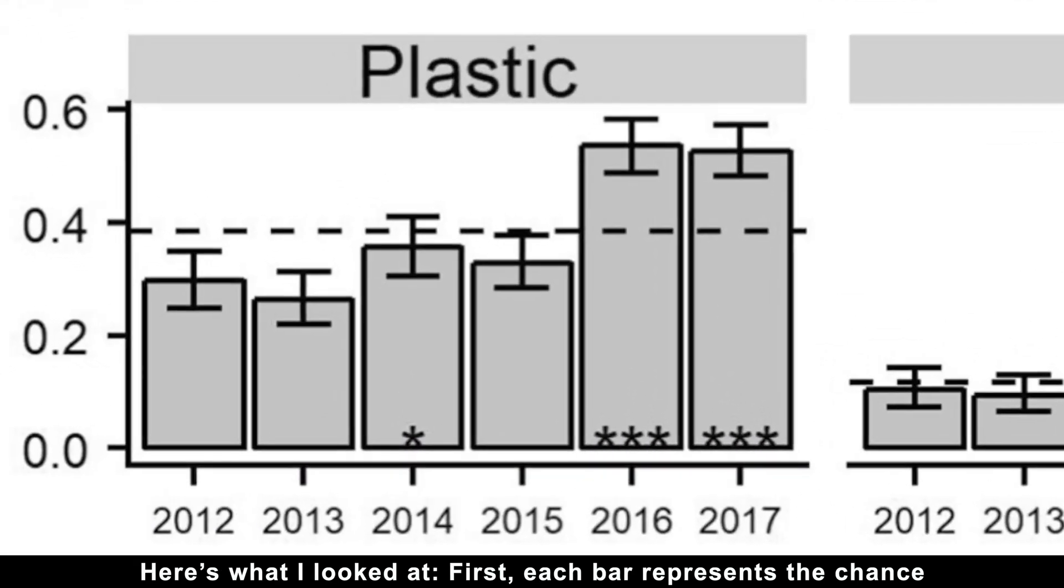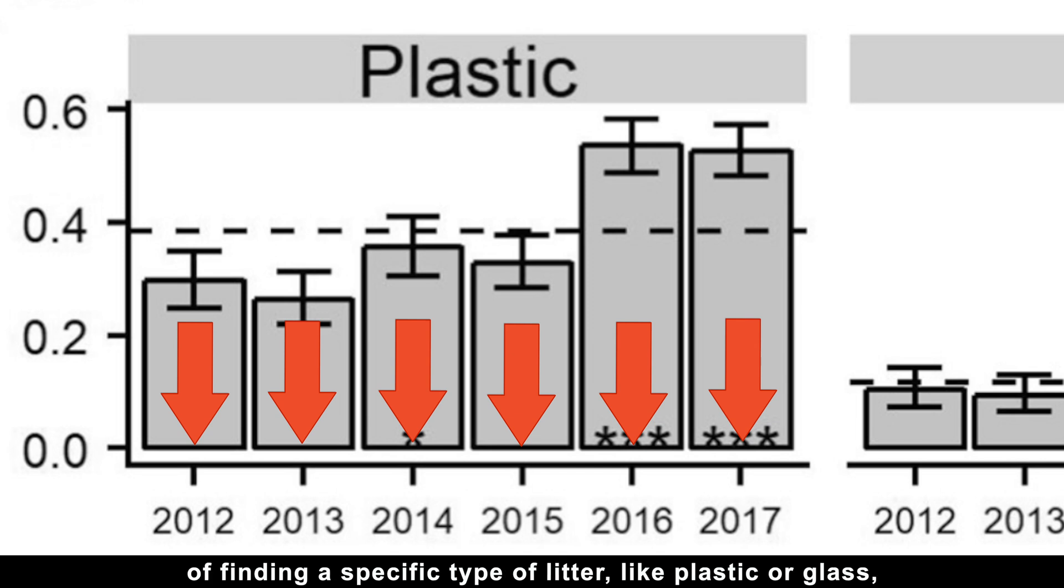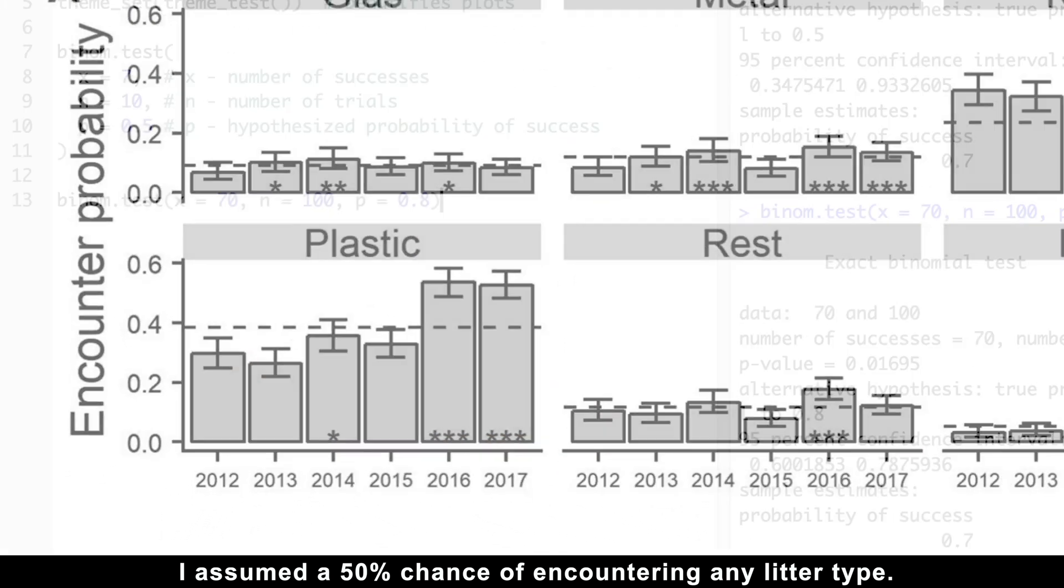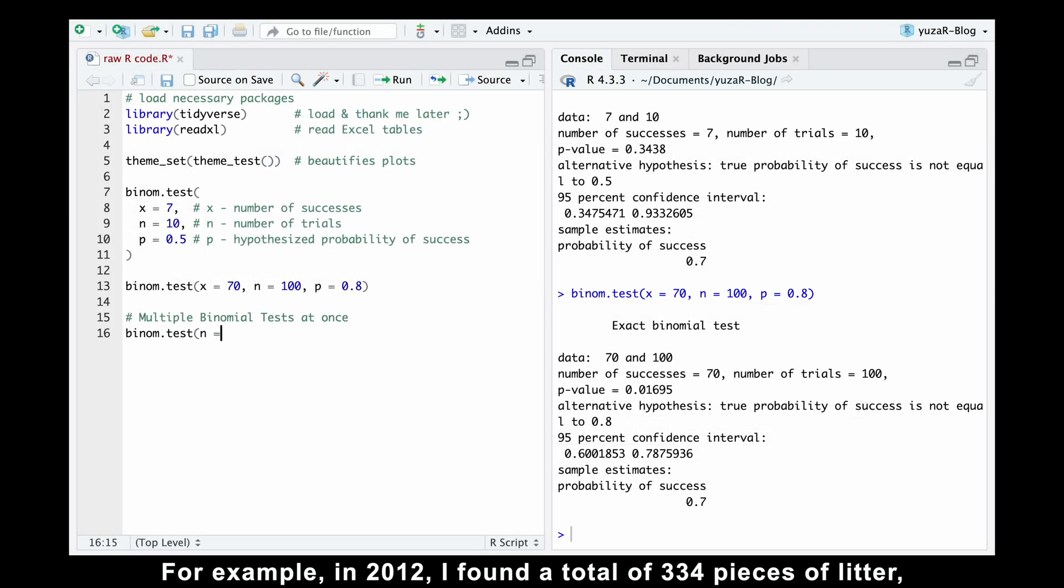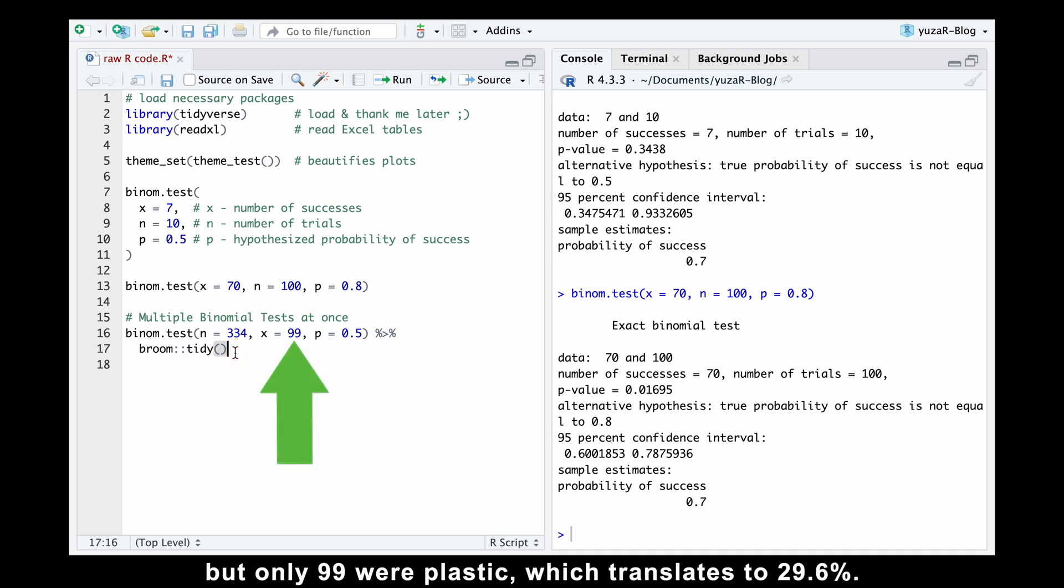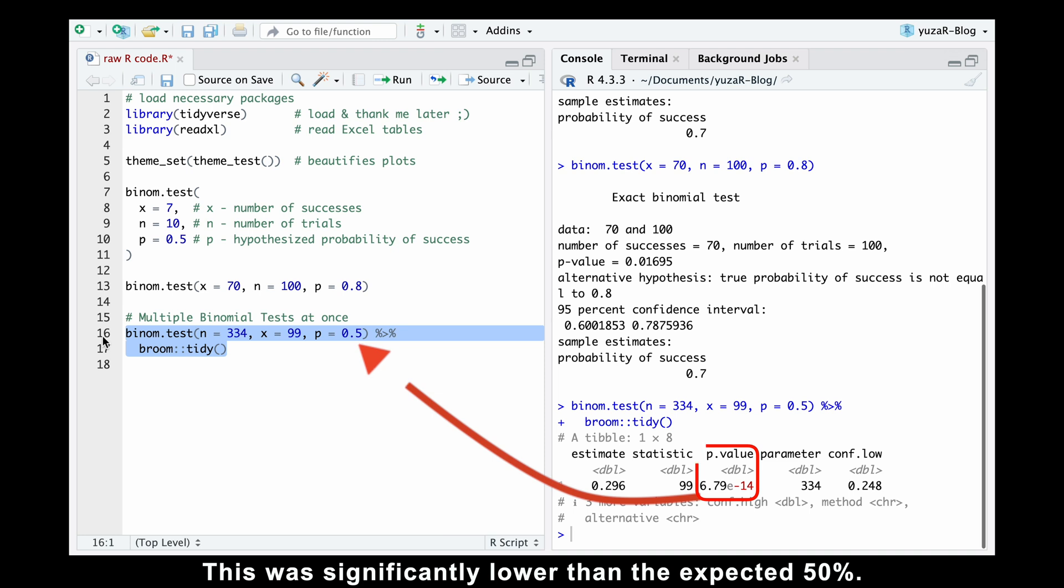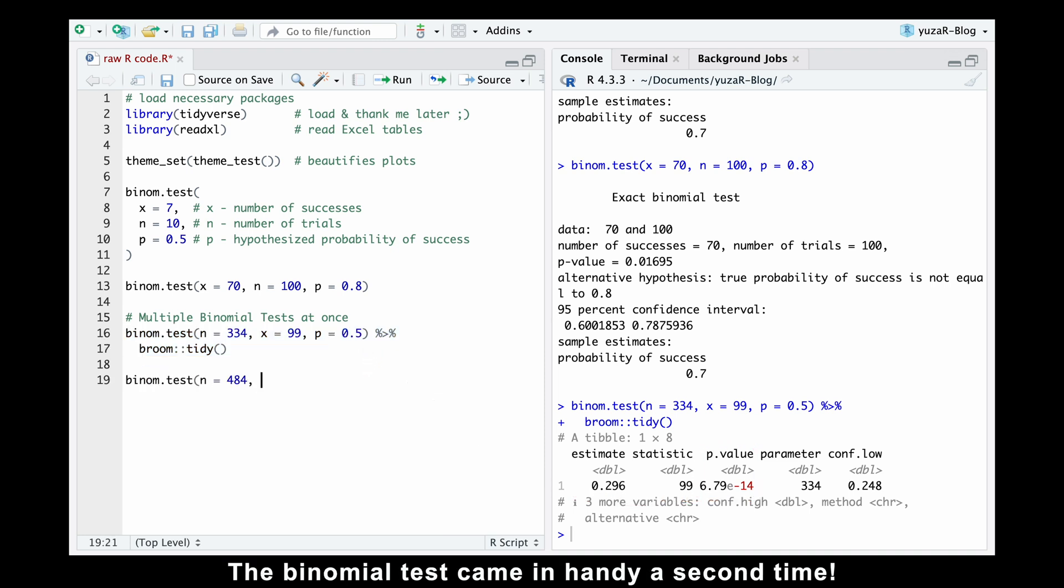Here is what I looked at. First, each bar represents the chance of finding a specific type of litter, like plastic or glass, in a particular year. Since I had no clue what to expect, I assumed a 50% chance of encountering any litter type. For example, in 2012, I found a total of 334 pieces of litter, but only 99 were plastic, which translates to 29.6%. This was significantly lower than the expected 50%. The binomial test came in handy a second time.